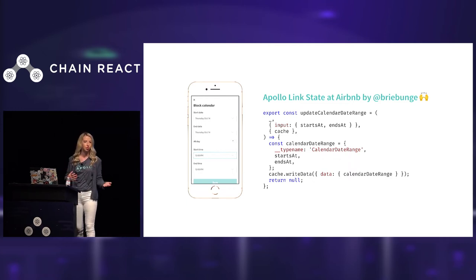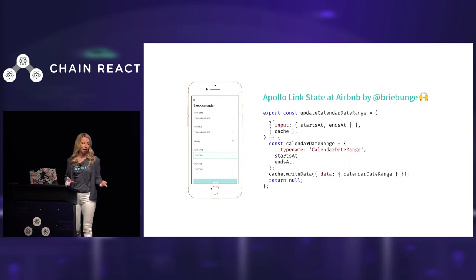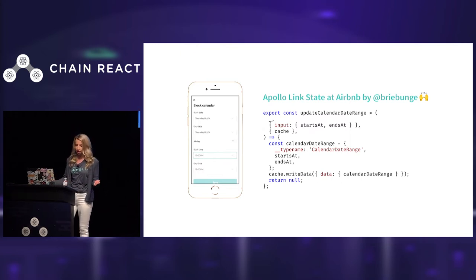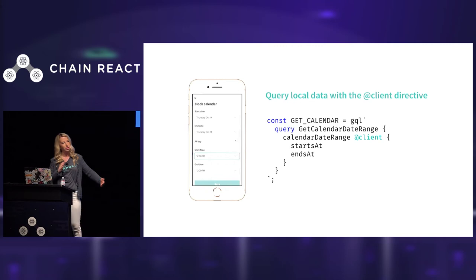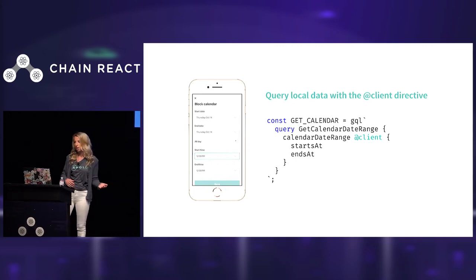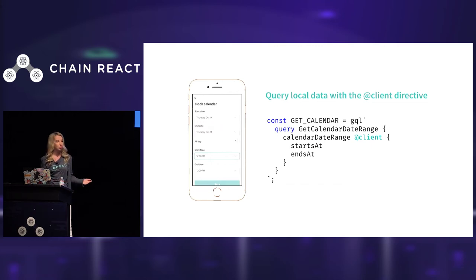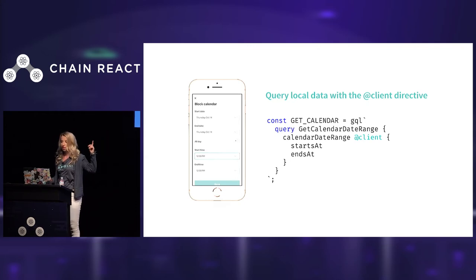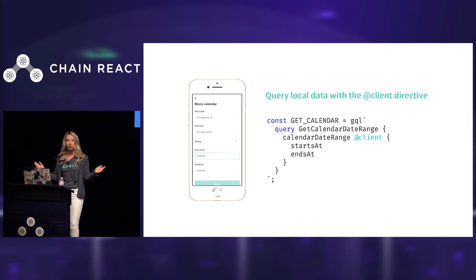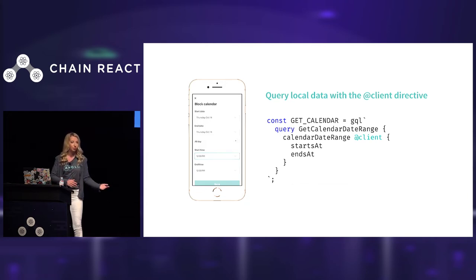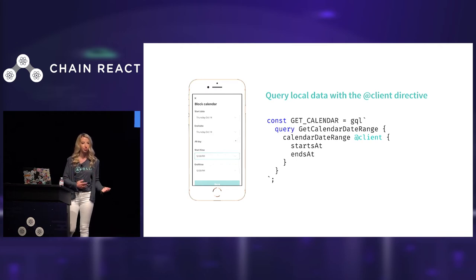This is really awesome because we only have to learn one model for reading and writing data regardless of where it's stored. The only difference here is that the cache is added to the resolver's context so you can read and write directly to the Apollo cache using the cache.writeData method. To query this data from another component in your React tree, you just write a GraphQL query the same way you would for server data and add the @client directive to tell Apollo Client to direct that query to the Apollo cache instead of a remote server. This is extremely flexible — you can request local and remote data in one query, calculate local data from remote data, and even add client-only fields to server data.